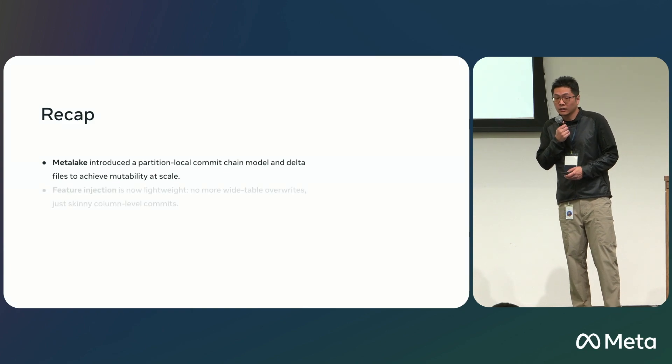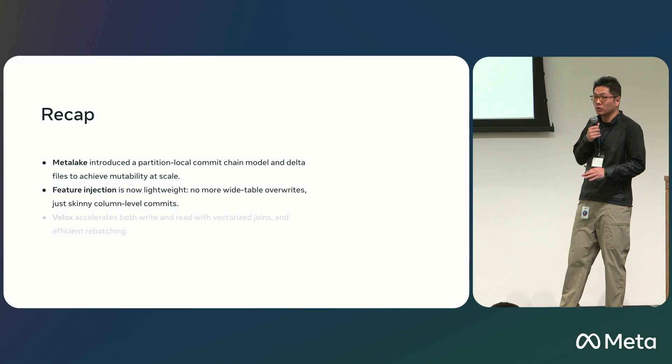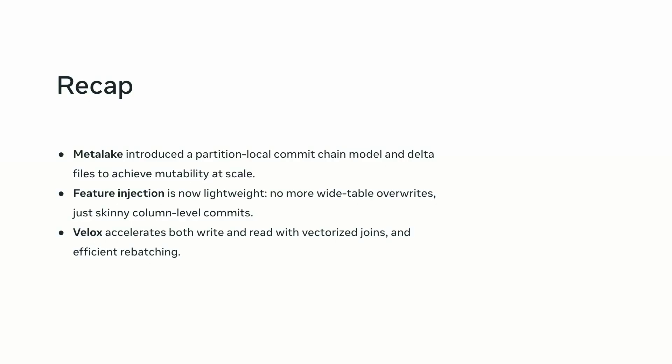To recap: MetaLake introduced a partition-local commit model associated with delta files, created base-file-to-delta-file association policies, and achieved mutability at scale. Feature injection is now much more lightweight — we only need to drop a small portion of columns to disk and merge on the fly. This helps machine engineers achieve faster feature preparation pipelines and parallelize their experiments. VLOX plays a key role in accelerating both write and read paths with vectorized joins and efficient rebatching techniques. Thanks for listening.